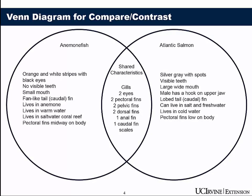Here's an example of a Venn diagram about two kinds of fish. One is the anemone fish — the kind Nemo is from the movie Finding Nemo — and you can see it says orange and white stripes. The other kind of fish is a salmon. All of the details on one side describe only the salmon, and all the details on the other side describe only the anemone fish. The details in the middle are shared characteristics between the two fish. This is a nice example of how you use a Venn diagram.